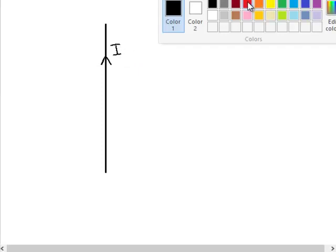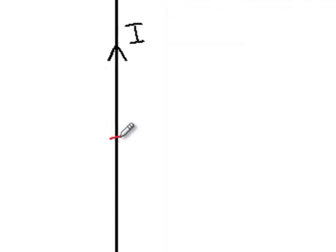Let's say we take a straight current carrying wire and there is a current flowing in this direction. There is a current I in the wire. Now we take a small element of this wire, a small portion. This is a tiny portion of this wire, tiny length.